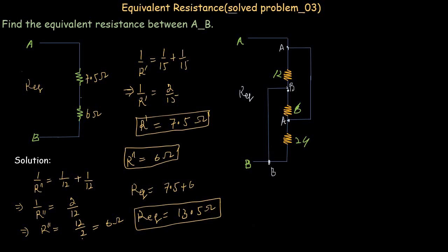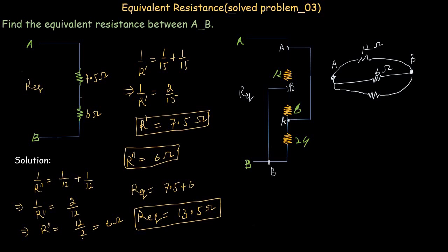To simplify this network: the 12-ohm resistor is connected between point A and point B; another 12-ohm resistor is connected between point A and point B; the 6-ohm resistor is connected between point B and point A; another 6-ohm resistor is connected between point B and A; and the 24-ohm resistor is also connected between point A and point B.